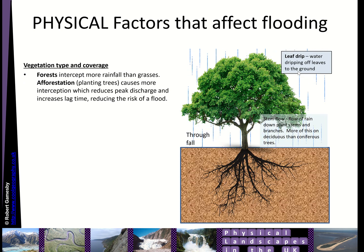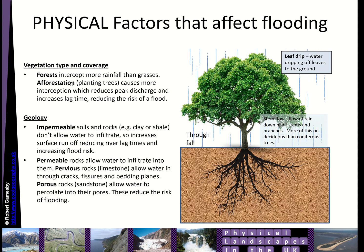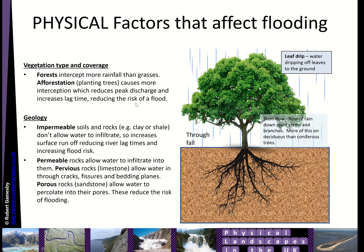Vegetation is the next physical factor. Forests intercept more than grasses — the leaves intercept rainfall, then it drips to the ground as throughfall, and some water flows down the stem as stemflow. Trees also break up the soil and rock, allowing more water to infiltrate. Afforestation — planting trees — is a human factor that reduces peak discharge and reduces flood risk. Impermeable soils and rocks don't allow water to infiltrate, which increases surface runoff, reduces lag time, and increases flood risk.